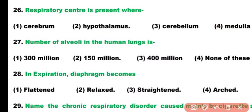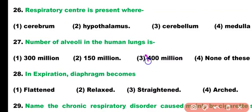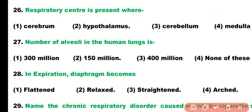Question number 27. The number of alveoli in the human lungs is: 300 million, 150 million, 400 million, or none of these. Correct answer is option 3. The number of alveoli in human lungs is expected to be between 400 million and 600 million.